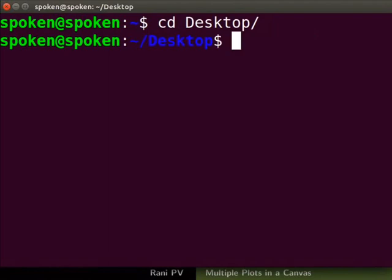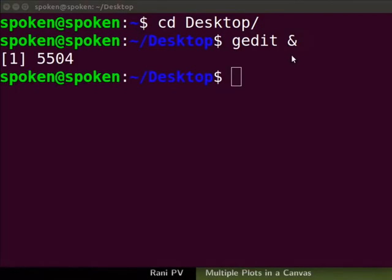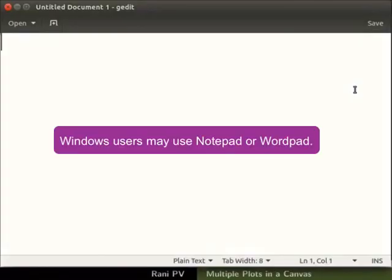I will demonstrate the multiplot command with 4 graphs in one canvas. Type G-Edit space ampersand. The ampersand makes the process run in the background. It detaches the process from the terminal. Press enter to open G-Edit. Windows users may use notepad or wordpad.